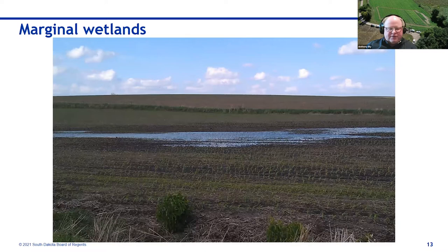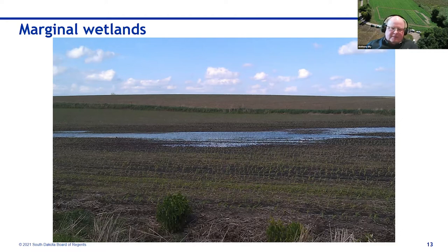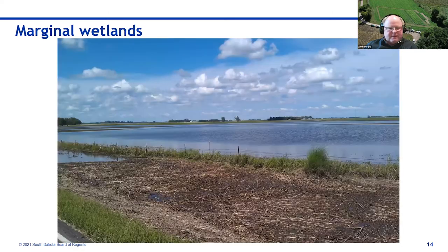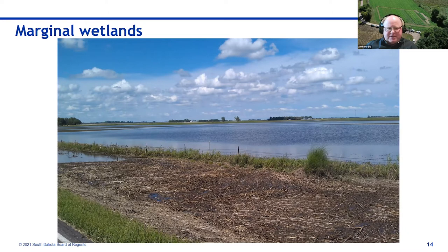Marginal wetlands are also an example of areas that could be reduced in productivity. There's a lot of talk about tile drainage as a valid tool, but it really takes a good situation for tile drainage to work, and there are areas that will still remain wet — those would be good examples of marginal areas. The frequency of higher precipitation events has become more common, and more fields have experienced repeated flooding in recent years.